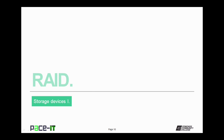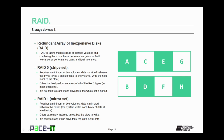Now let's move on to RAID. RAID stands for Redundant Array of Inexpensive Disks. RAID takes multiple disks or storage volumes and combines them to achieve performance gains, fault tolerance, or both. The first type is RAID 0, also known as a stripe set. It requires a minimum of two volumes and data is striped between the drives — writing a block to one volume, then the next block to the other. RAID 0 offers the best performance out of all RAID types in most situations, but it is not fault tolerant. If one drive fails, the whole stripe set is ruined.